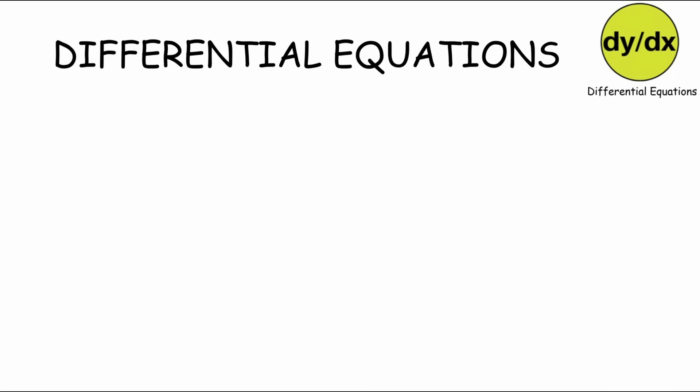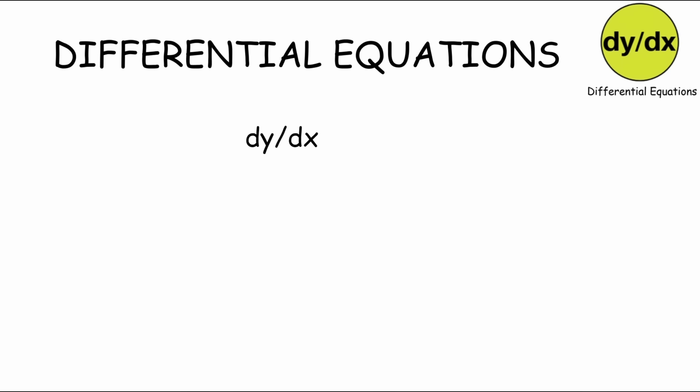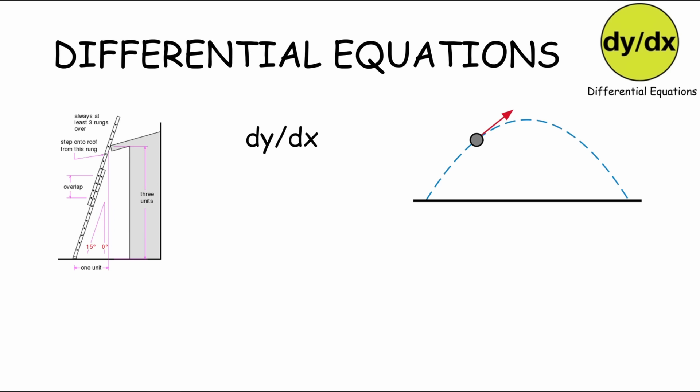Differential equations are a type of calculus that helps us understand how things change. They involve rates of change and show how a quantity depends on its own rate of change. The following ladder problem is a classic example of a differential equation in physics.